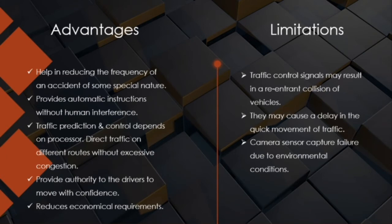Now let's talk about the advantages and limitations of our system. The major advantage is that it reduces the frequency of accidents in high traffic areas. It provides automatic instructions without any human interference, which means we can reduce the number of traffic police required in different areas and use that manpower elsewhere. The system also gives drivers confidence to move knowing traffic conditions. It reduces economical requirements as the system is not very expensive, and traffic prediction and control can be done using the data captured by the camera sensor.